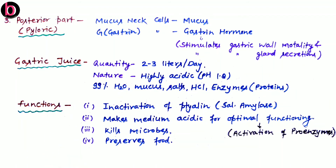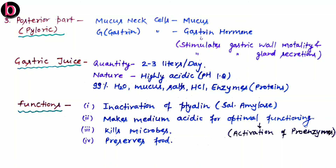The functions of gastric glands are: first, inactivation of ptyalin — salivary amylase, or diastase, which is discussed in the salivary glands topic, is inactivated when saliva reaches the stomach via gastric juice. Second, gastric juice makes the medium acidic, which is strongly needed for enzymatic activities in the stomach. Third, gastric juice kills harmful pathogenic microbes that enter along with food. Fourth, gastric juice also helps in preservation of food in the stomach.